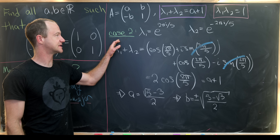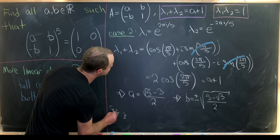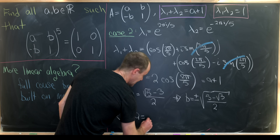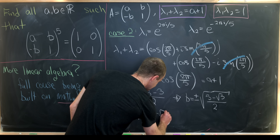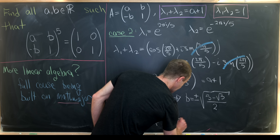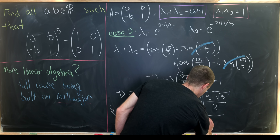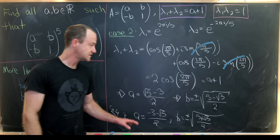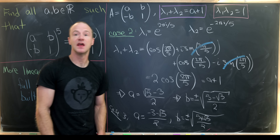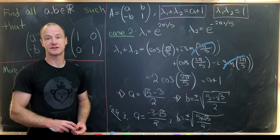The third case has lambda one equals e^(4πi/5) and lambda two equals its multiplicative inverse e^(6πi/5). In that case, a equals (−3 − √5)/2 and b equals ±√((√5 + √5)/2), giving two more solutions. In total, we have one solution from case one, two from case two, and two from case three — five solutions altogether. And that's a good place to stop.